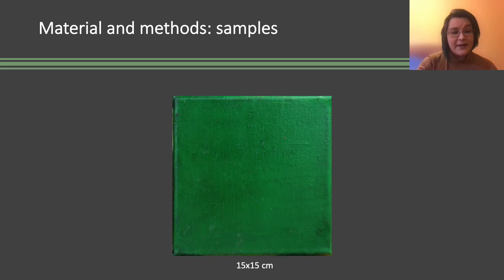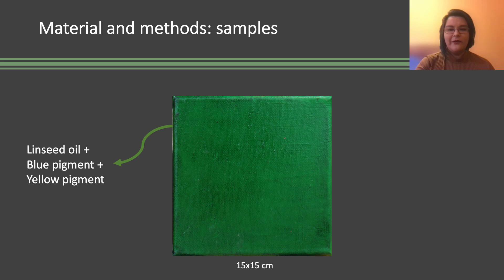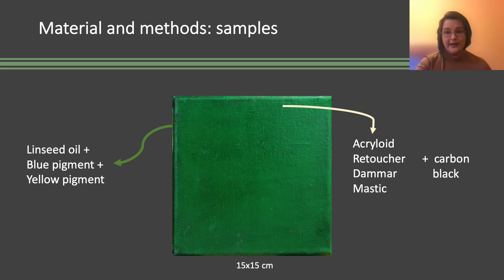The test samples are modern canvases painted with oil color and coated with four different varnishes with a dispersion of black carbon pigment in order to make it easy to observe the removal during the cleaning. All samples were artificially aged in an aging chamber.